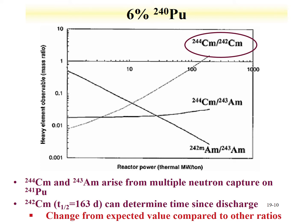Similarly, if one finds plutonium that is 6% Pu-240 and the curium isotopic ratio is evaluated, we see a different trend between curium-244 and curium-240. As the thermal reactor power increases, more curium-244 is produced in relative terms, and this ratio goes up. This is a mass ratio, so if one were to do activities, one would have to convert to masses, or by mass spectrometry one could perform these measurements.